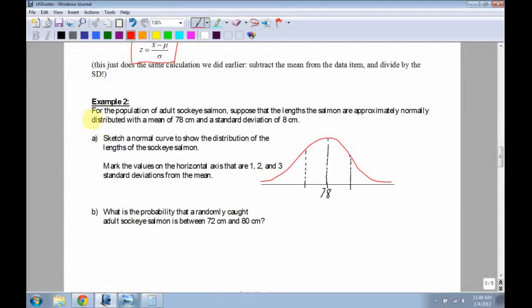It says, for the population of adult sockeye salmon, suppose that the lengths of the salmon are approximately normally distributed with a mean of 78 and a standard deviation of 8. So my mu equals 78, and my sigma equals 8. It says, sketch a normal curve to show the distribution of the lengths of the sockeye salmon. Then it says, mark the values on the horizontal axis that are 1, 2, and 3 standard deviations from the mean.